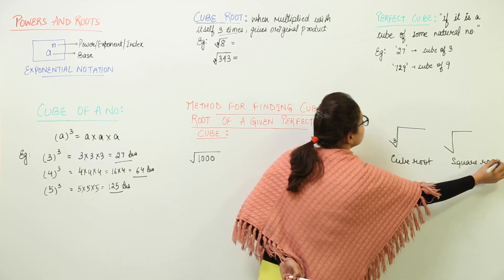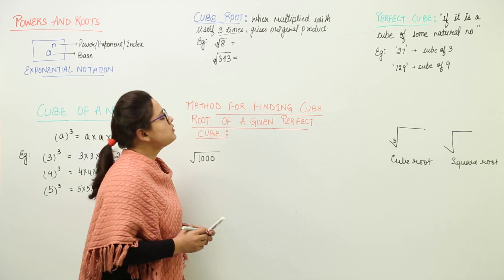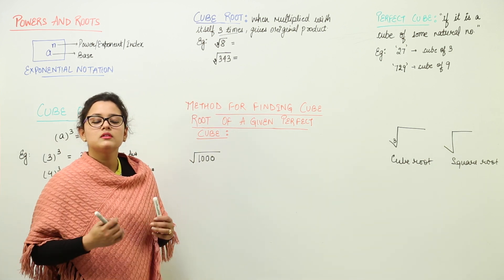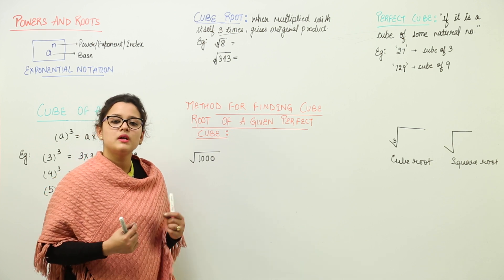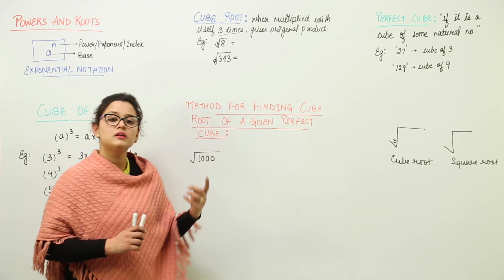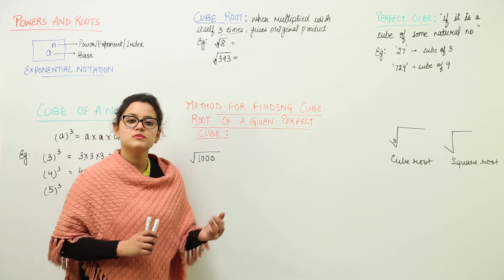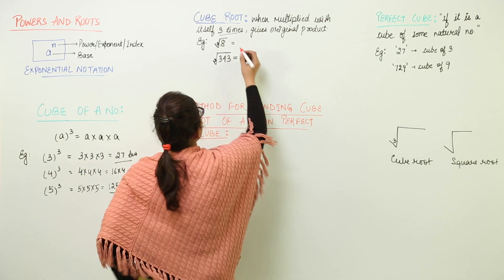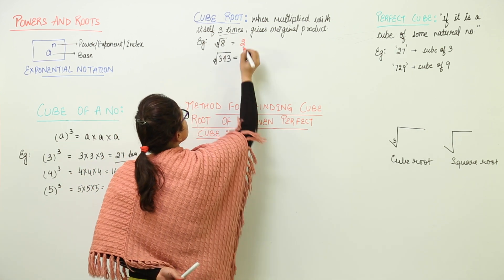Now let us continue with the cube roots. Cube root of 8. Now cube root of 8 is nothing but a number which is multiplied with itself 3 times. Now over here, can you think of any number which is multiplied with itself 3 times gives you 8? Yes, that is 2. So you can write that cube root of 8 is 2.